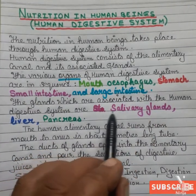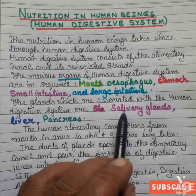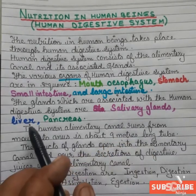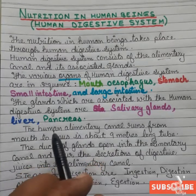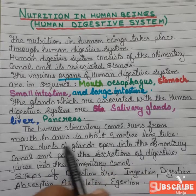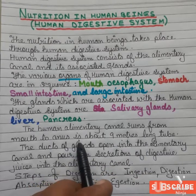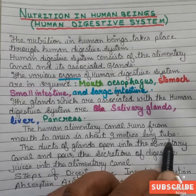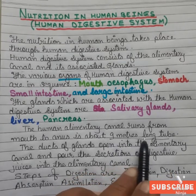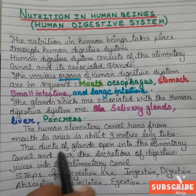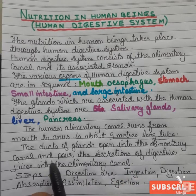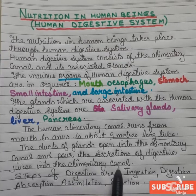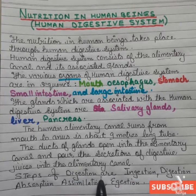There are three glands associated with the human digestive system. The first gland is the salivary gland, the second is the liver, and the third is the pancreas. The human alimentary canal runs from the mouth to the anus and is nine meters long. The ducts of these glands open into the alimentary canal and pour their secretion of digestive juices into it.